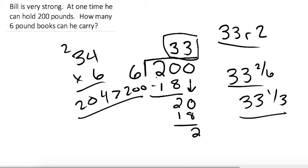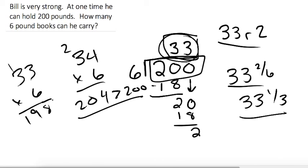So he can only carry 200. So 33, which is 33 times 6 would be 18, 198, is the maximum amount he can carry. 33 books. Thank you so much.